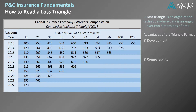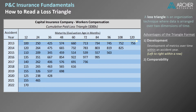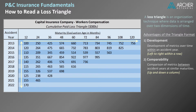Triangles allow users to observe development for a specific accident year by looking at a particular row from left to right. Triangles also allow users to compare metrics between accident years at similar maturities by looking up and down a particular column.